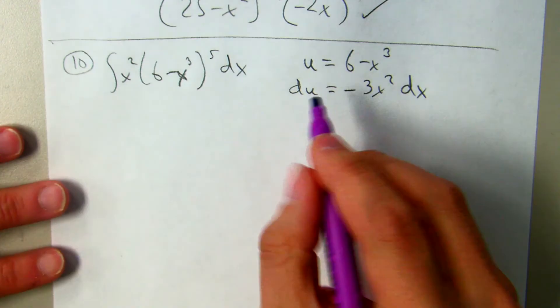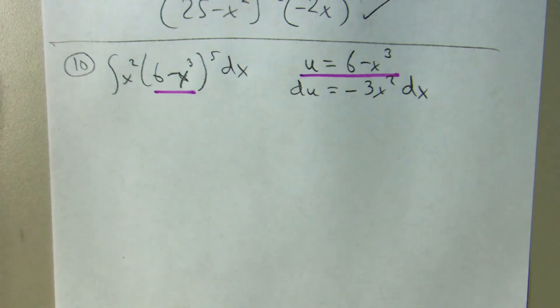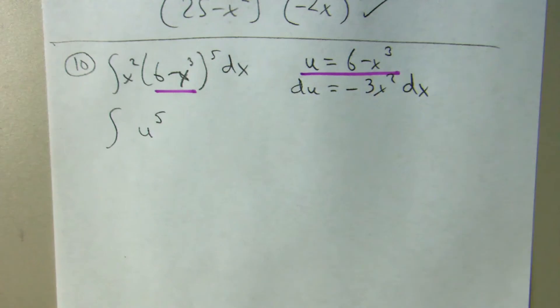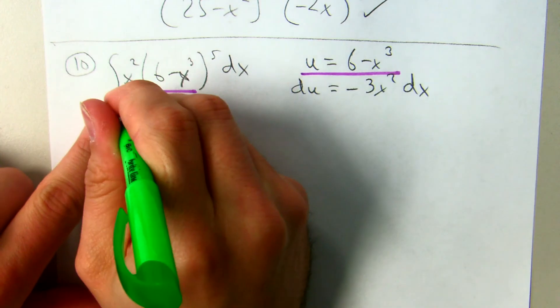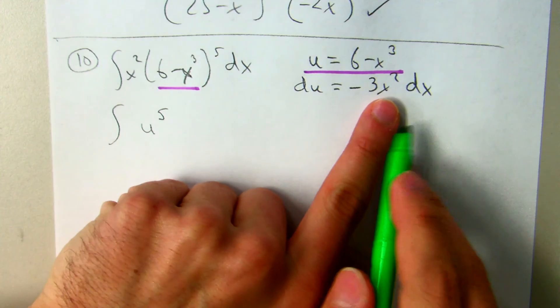Well, let's try to substitute some of this stuff in. So all of this can go in here. In place of x squared dx. That's almost du.